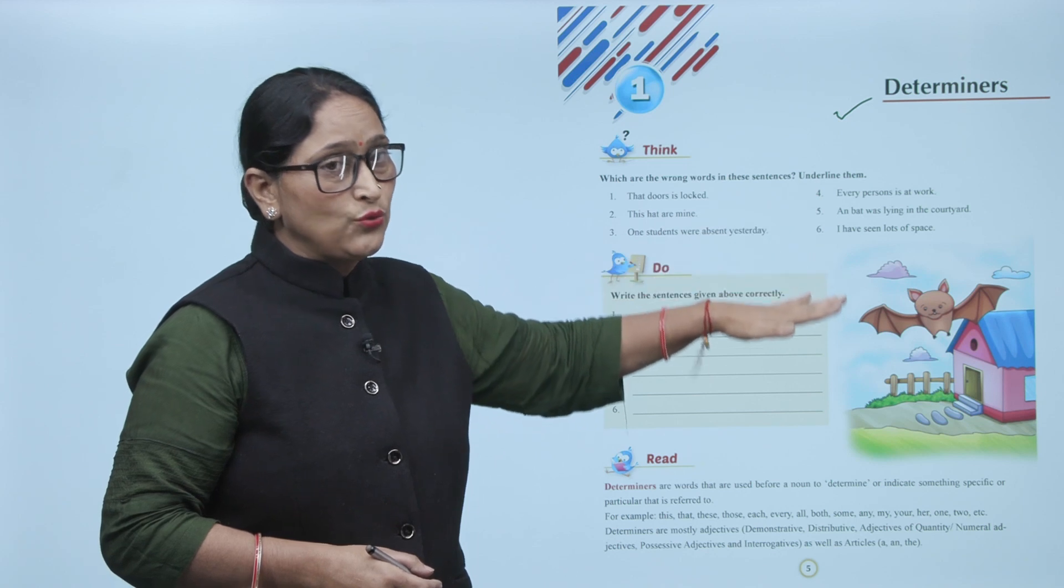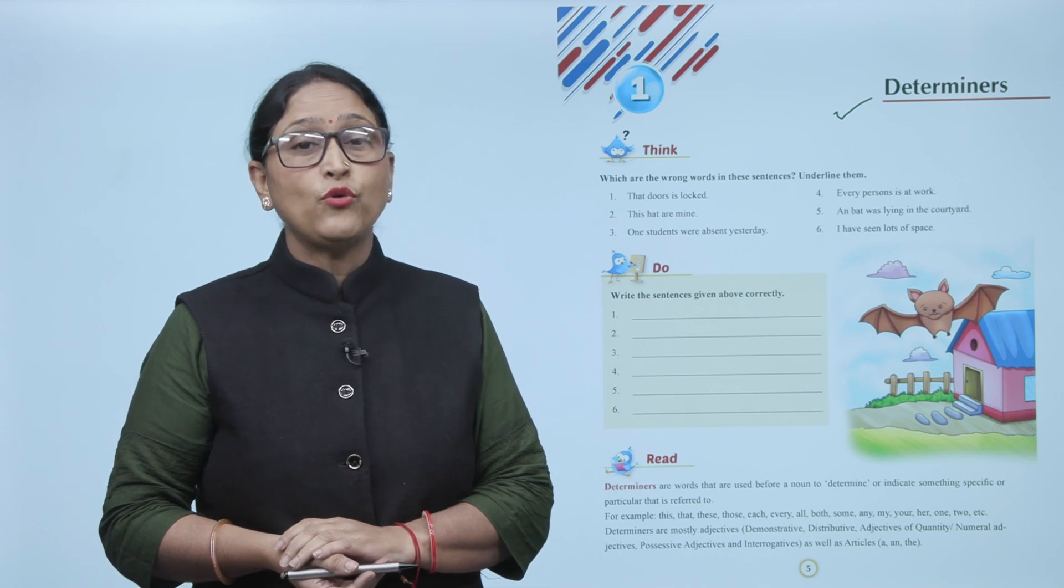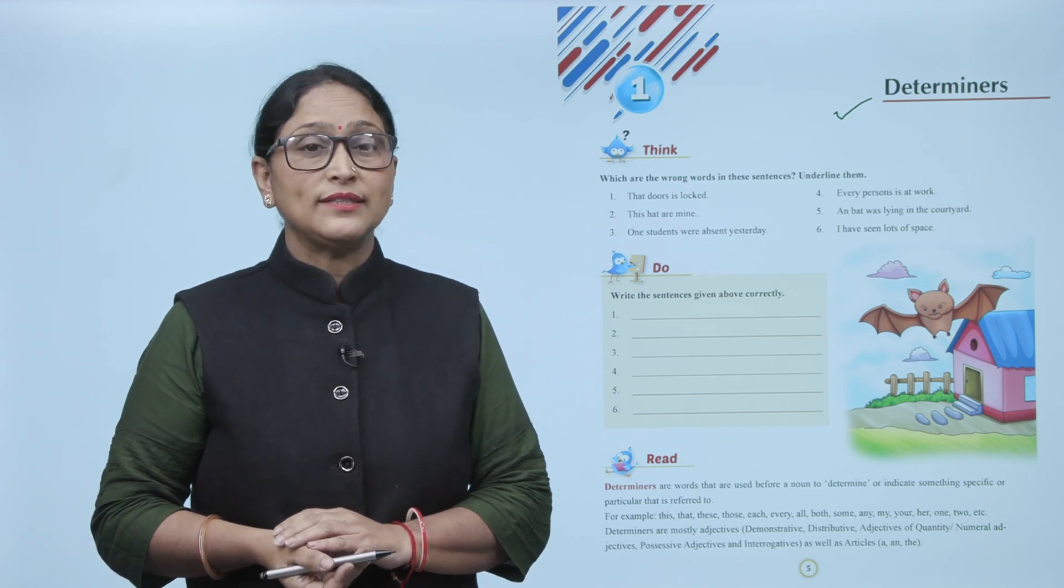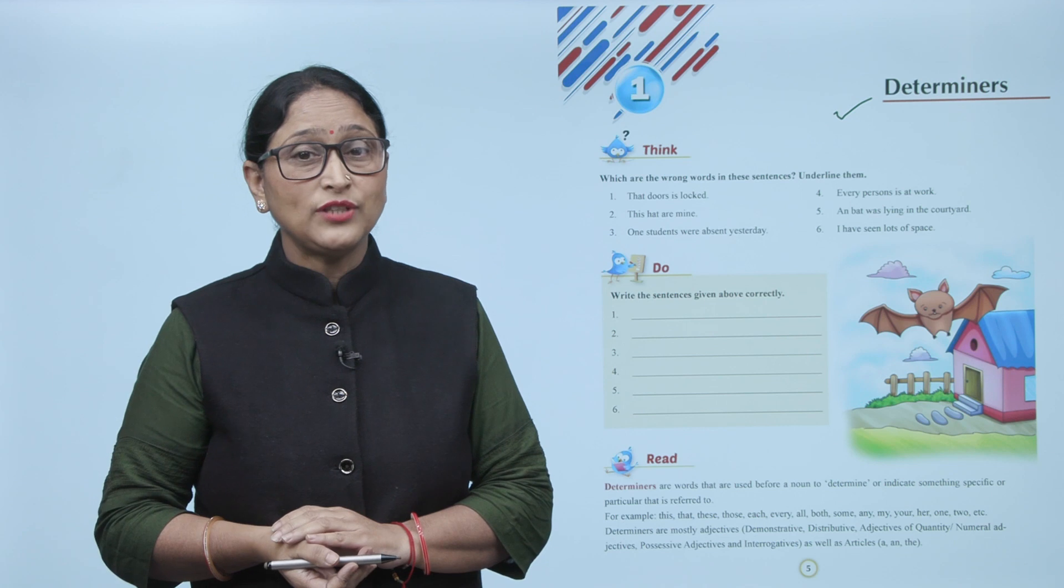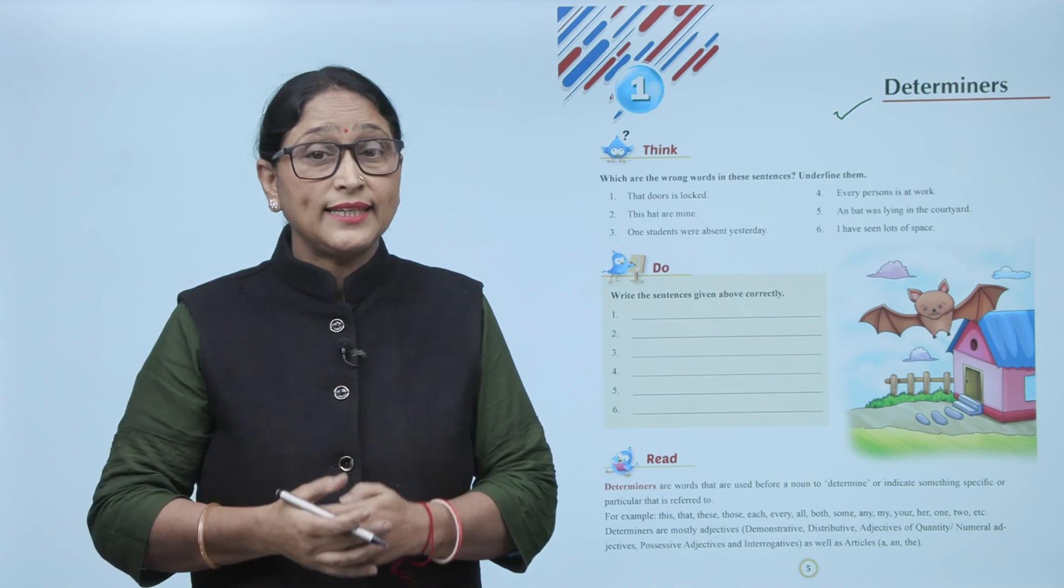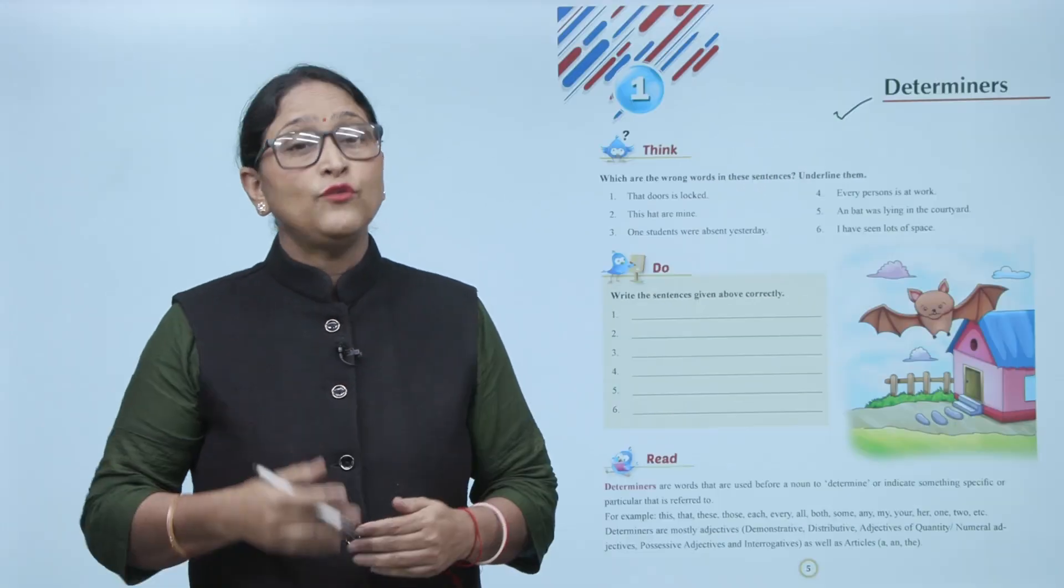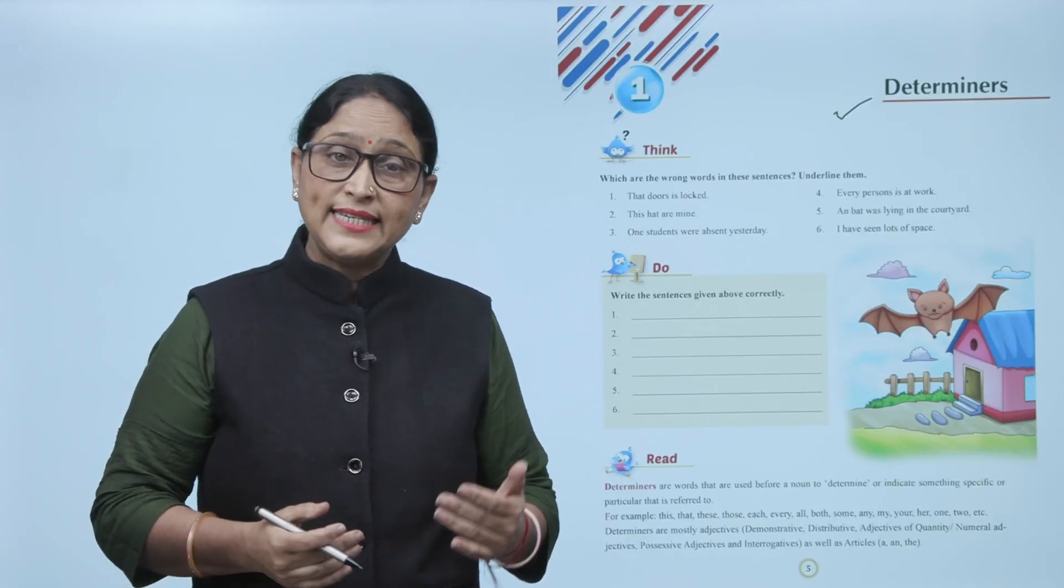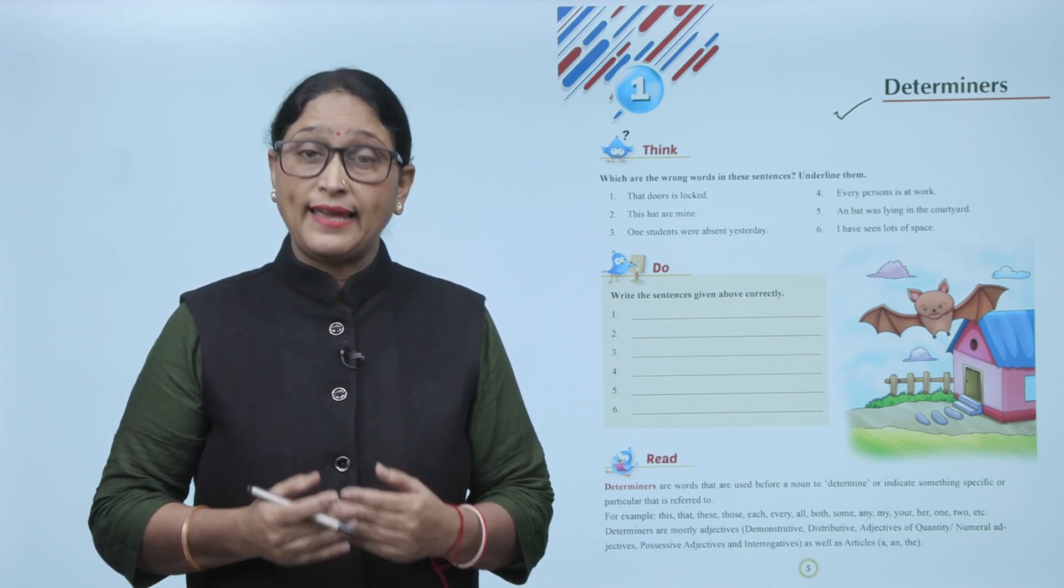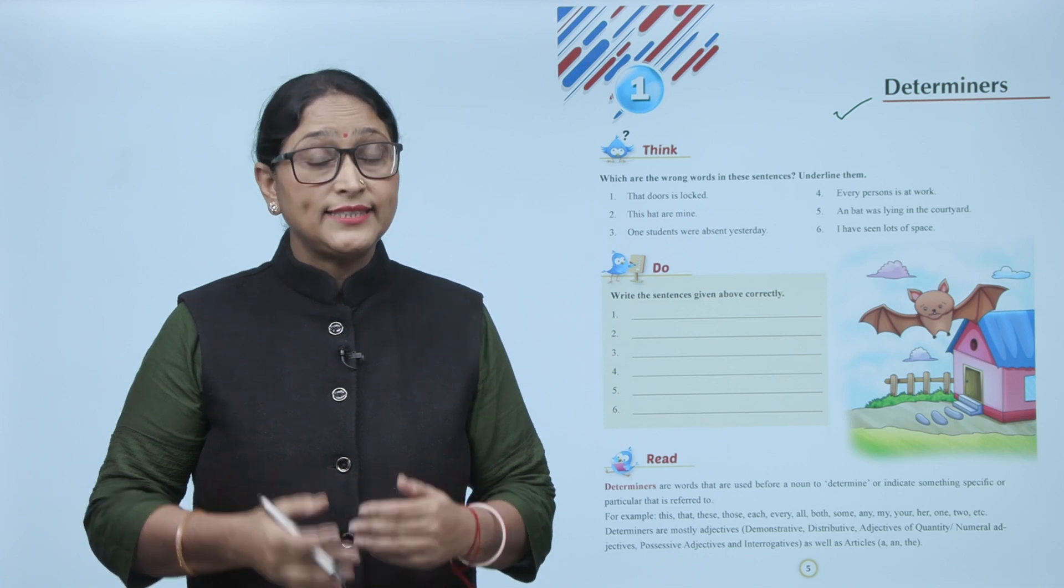Now write the sentences given above correctly. The sentences you just read were incorrect. Now read them and correct them. Determinants are words that are used before a noun to determine or indicate something specific or particular that is referred to. Determinants indicate a specific or particular thing. For example, this, that, these, those, each, every, all, both, some, any, my, your, her, one, two, etc.